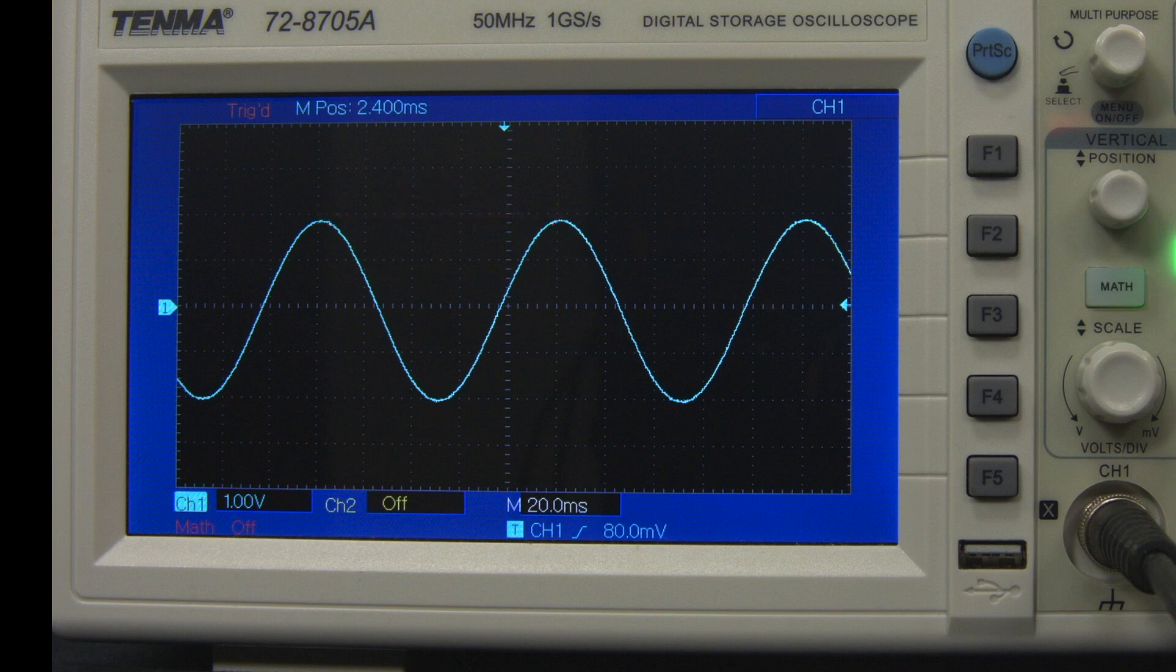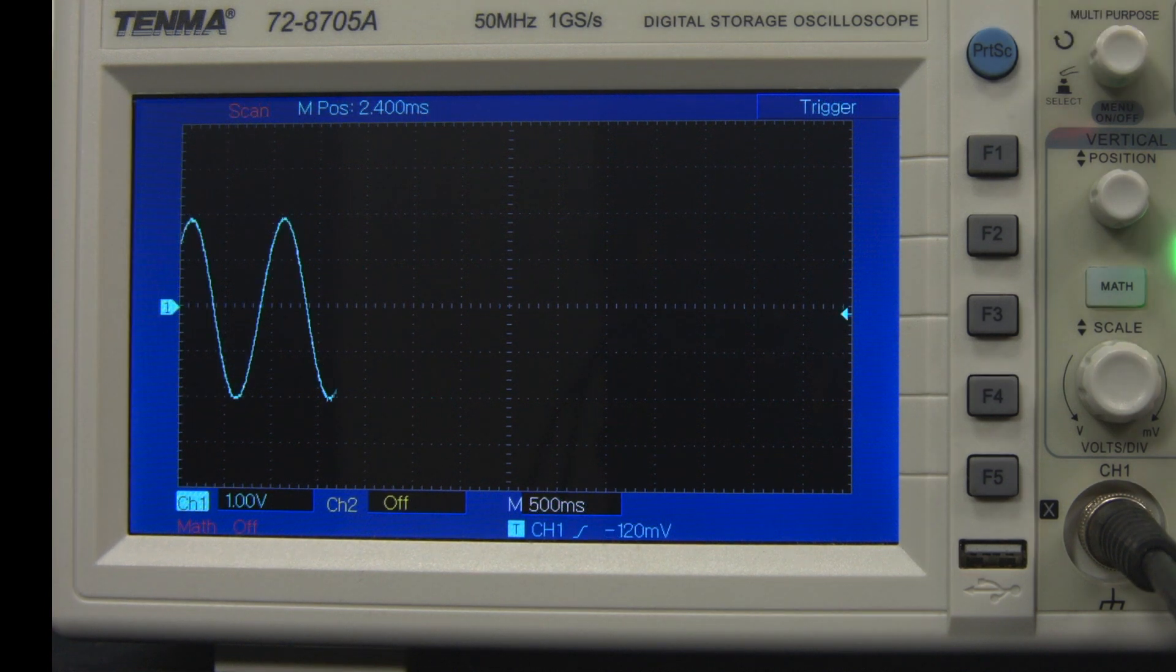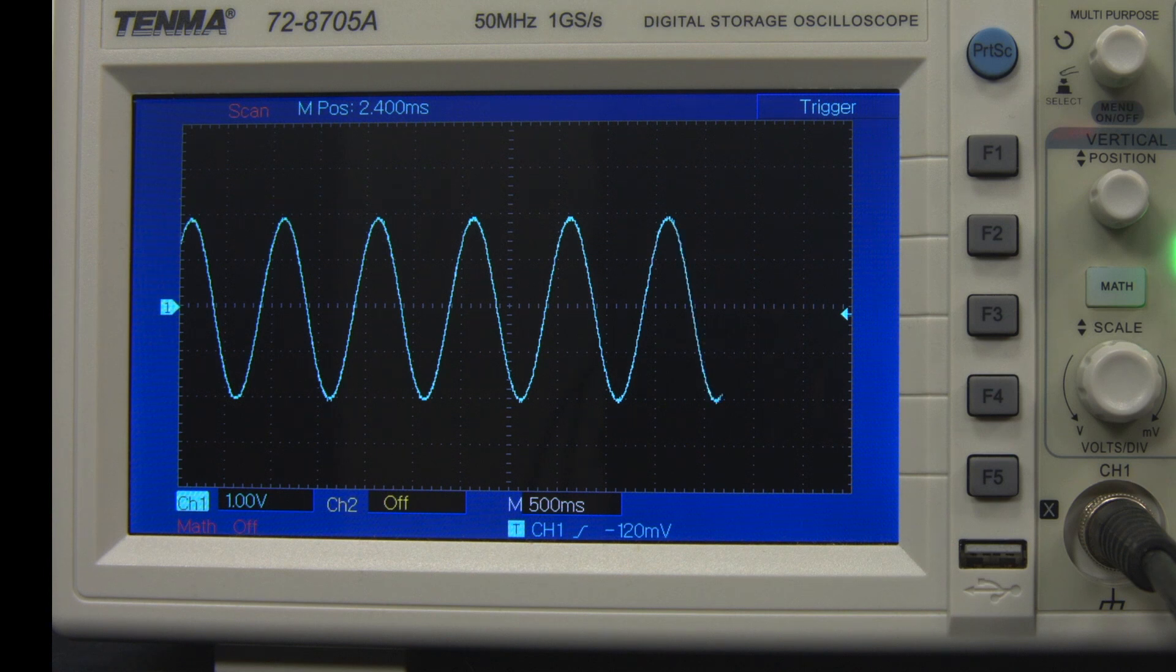The oscilloscope is constantly updating the displayed signal, but our eyes cannot follow such rapid updates. If we look at a lower frequency signal with a slower time base, we can see drawn out on the screen the time varying nature of the voltage.